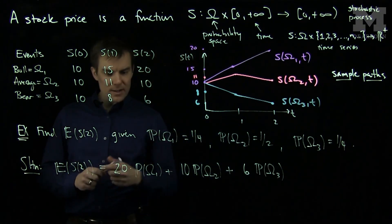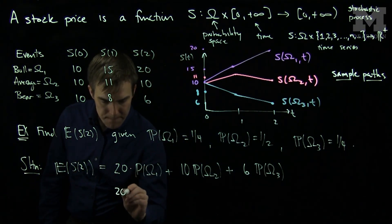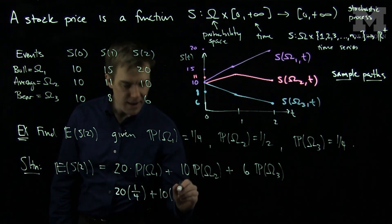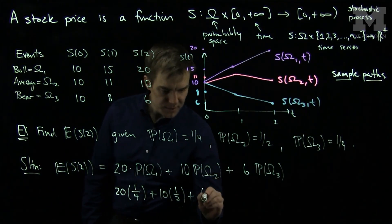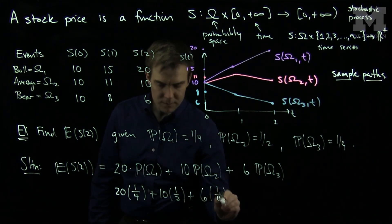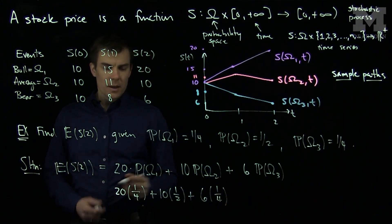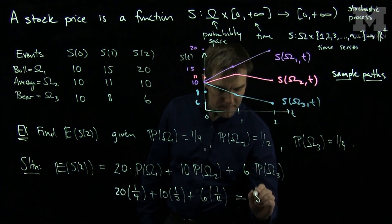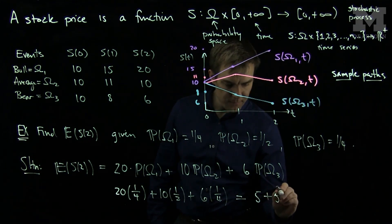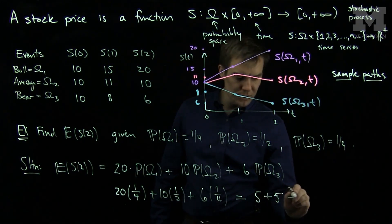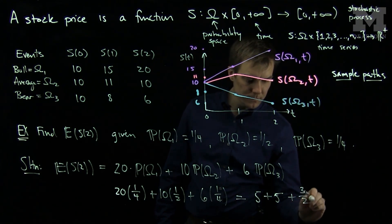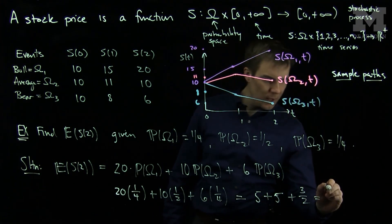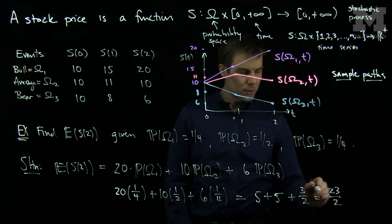So we see that this is 20 times a quarter plus 10 times a half plus six times a quarter. We can simplify this. So 20 times a quarter is five. 10 times a half is also five. And then I will have six over four, which is three over two. So I'll have 10 plus three over two. So 10 of course is 20 over two. So I'll have 23 over two.